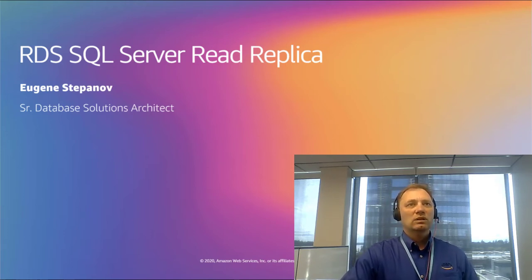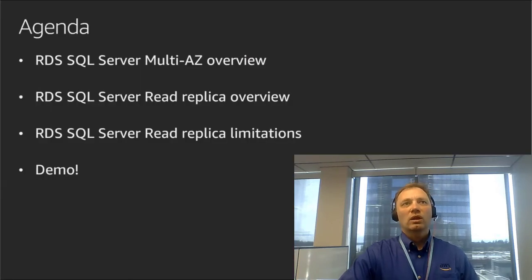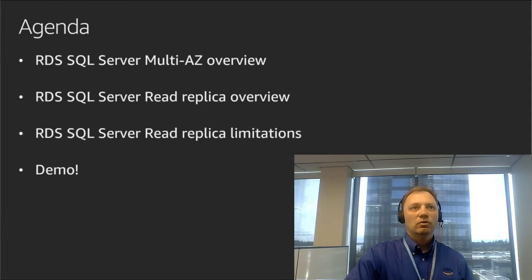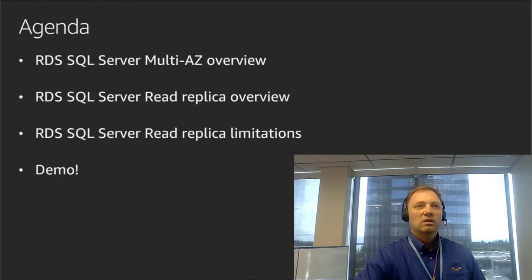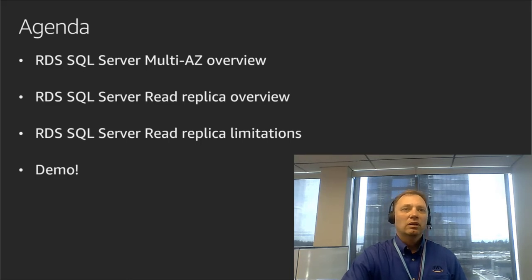Today we will talk about a relatively new feature that we launched on April 3rd of this year, and that is SQL Server Read Replica. The agenda for today: first, we will take a look at RDS SQL Server Multi-AZ feature. Then we will take a careful look at RDS SQL Server Read Replica, the new feature. The reason I want to discuss both of these features together is because they're very closely related. They're both built on SQL Server native technology called Always-On Availability Group, and Read Replica, in essence, is a logical extension of the Multi-AZ feature.